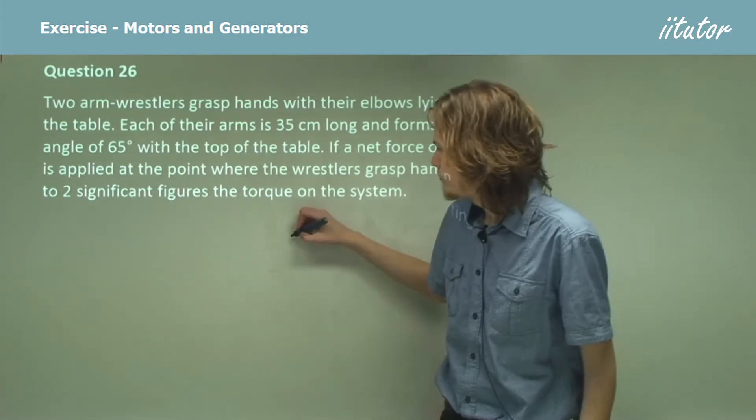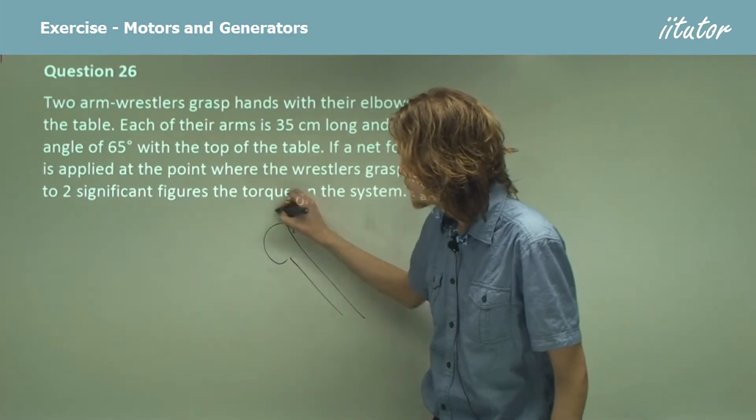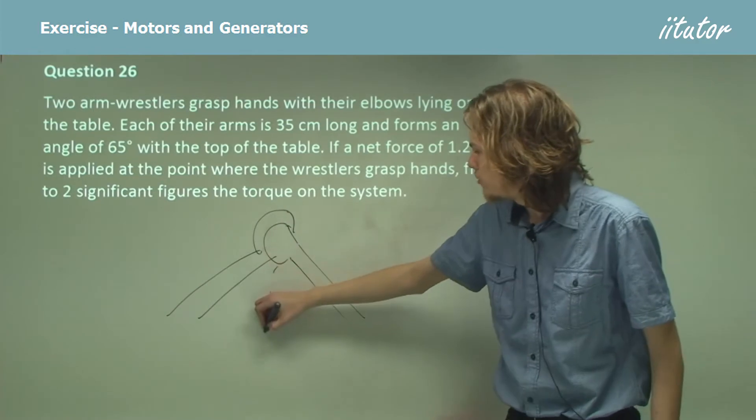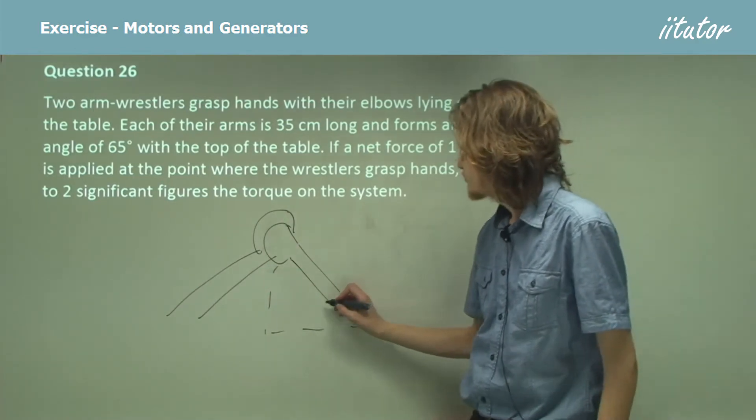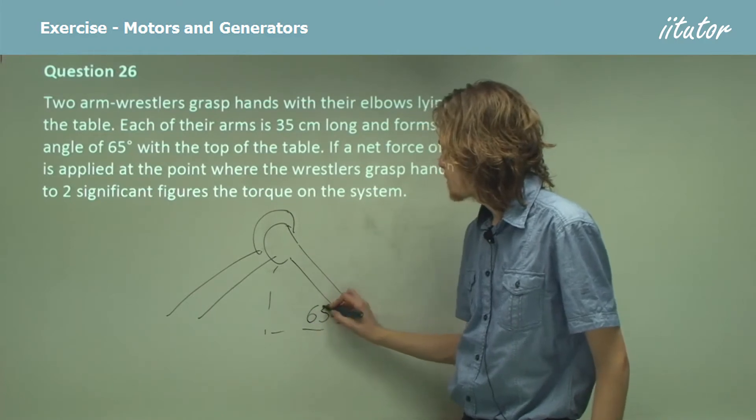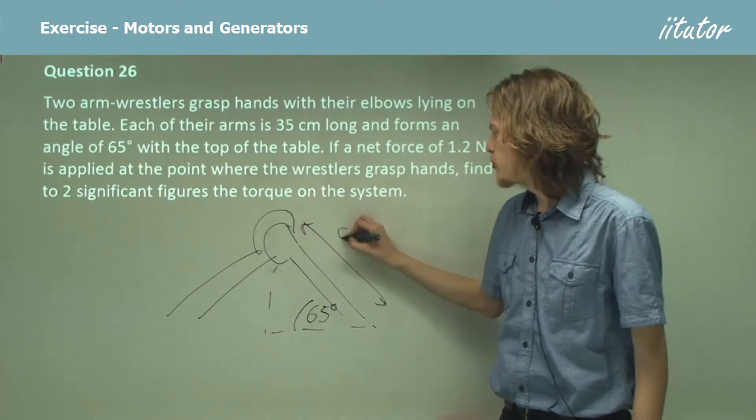So in this case we have two people grasping hands, looks something like that, and the angle that they form is, what is that, 65 degrees?